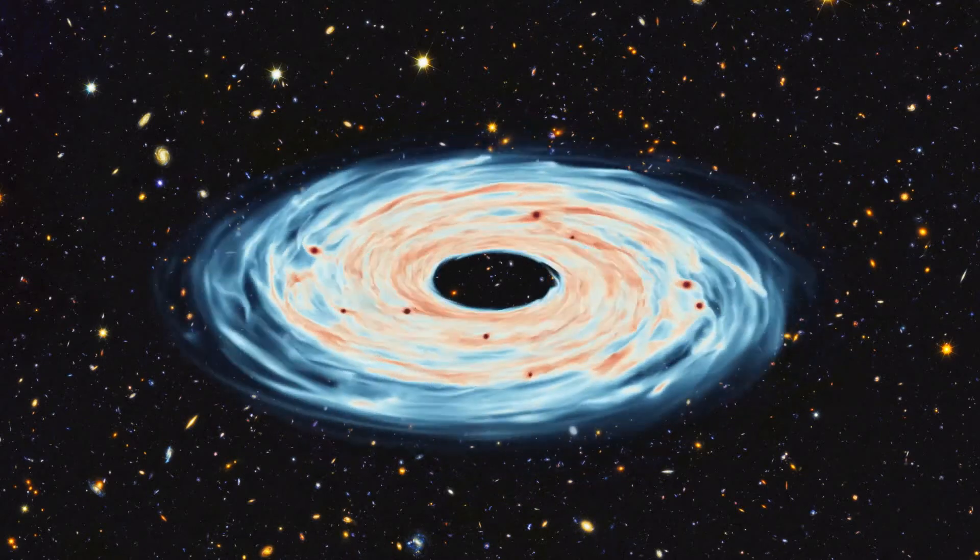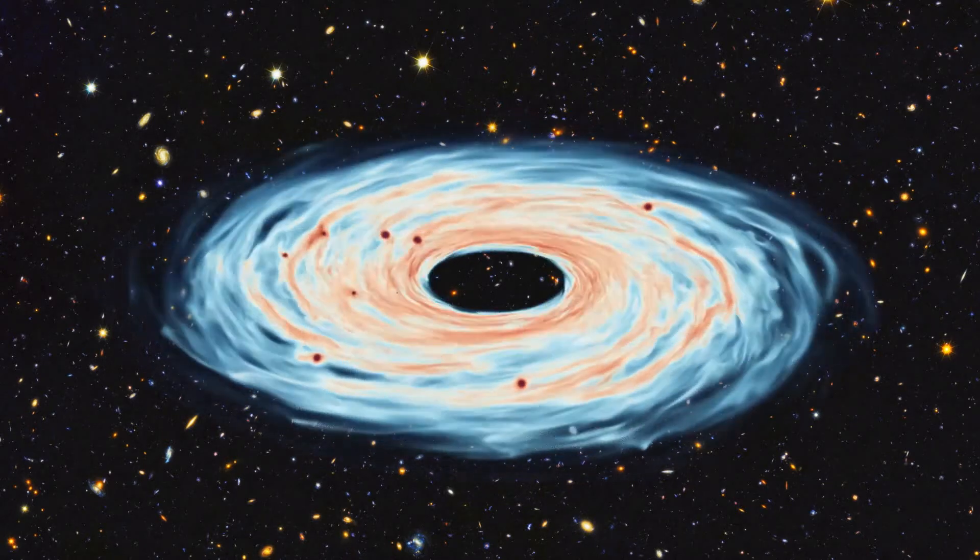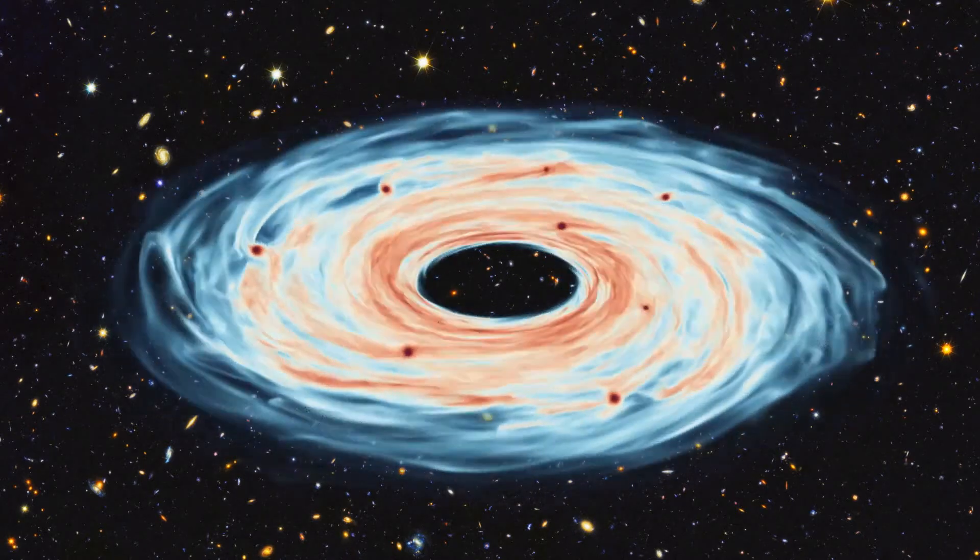These clumps are going to collapse under their own self-gravity directly into a giant planet. These giant planets are usually much more massive than what core accretion scenario can produce, let's say five times the Jupiter mass or more massive.